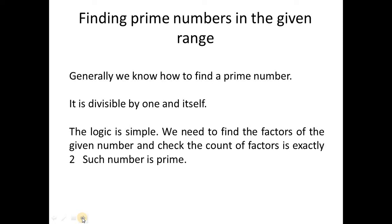The logic here is about factors. Whenever I say factors, we need to check the remainder. For example, if the number is 10 and we want to check its factors, we divide 10 by 1, 2, 3, 4, and so on up to 10. Whenever it is divisible, we increment the factor count. When I say whether 10 is a prime number or not, we get a factor count more than 2, and then we say it is not a prime number.